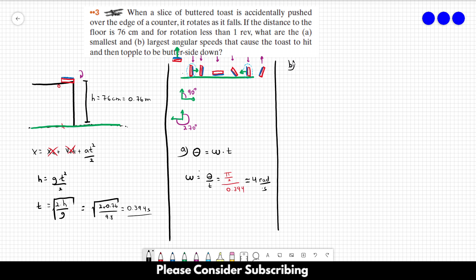As for letter b, we are going to do the same thing. However, in this case the angle is not π over 2, it's 3π over 2 divided by 0.394, and this will be roughly 12 radians per second. And that's it for problem number three.